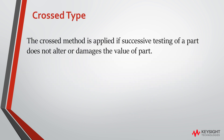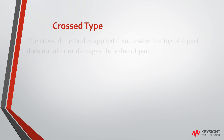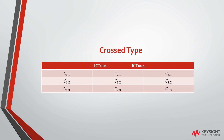The crossed method is applied if successive testing of a part does not alter or damage the value of the part. A single component can be tested by multiple equipment. Component 1 can be tested by both ICT001 and ICT004.